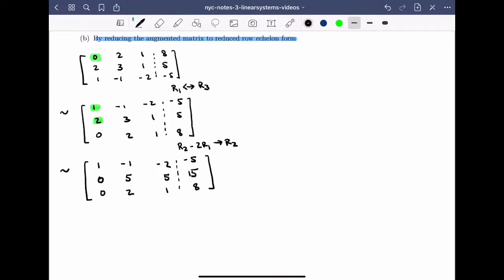At this stage, I'd like to have a 1 in this position here. I can do a scalar operation. In particular, I can do 1 fifth of row 2 becomes the new row 2, giving me the matrix 1, minus 1, minus 2, minus 5; 0, 1, 1, 3; 0, 2, 1, 8.